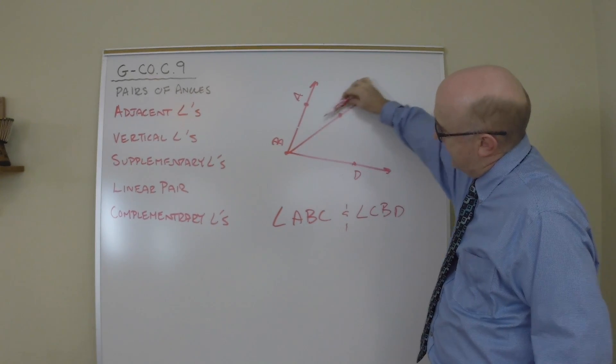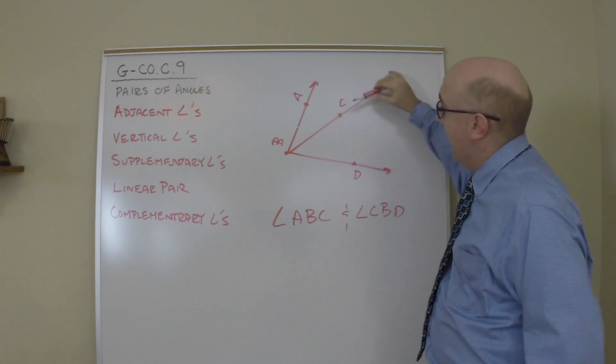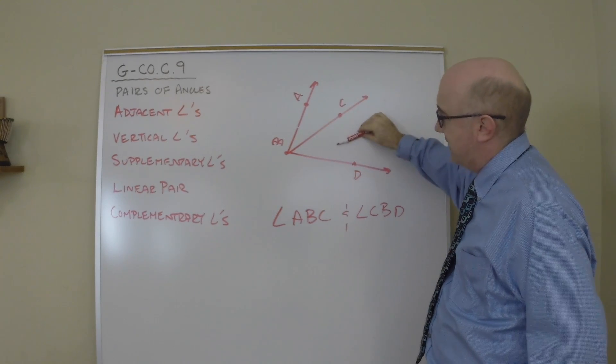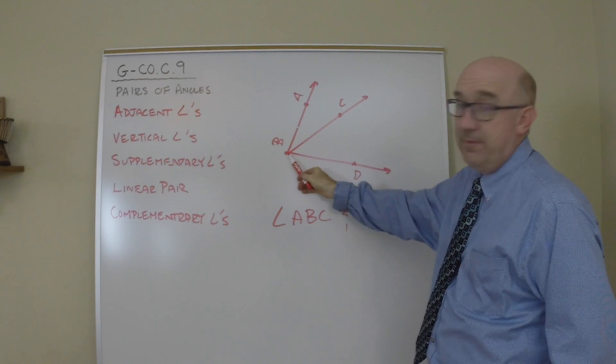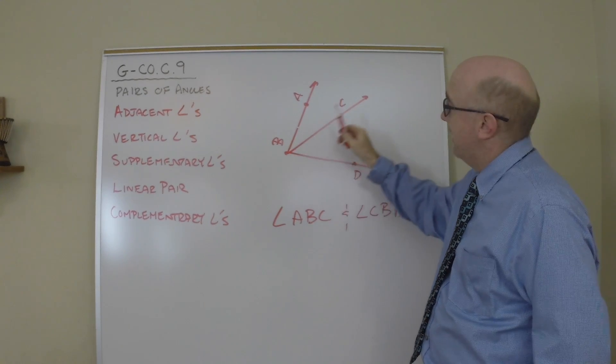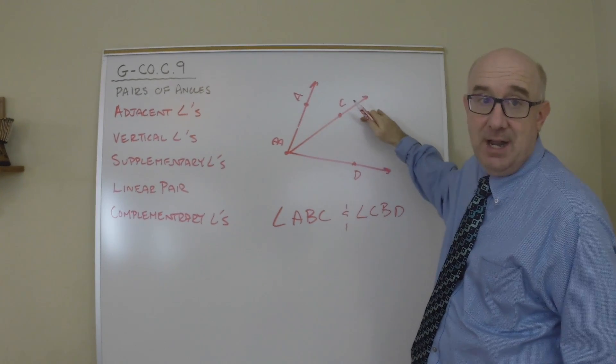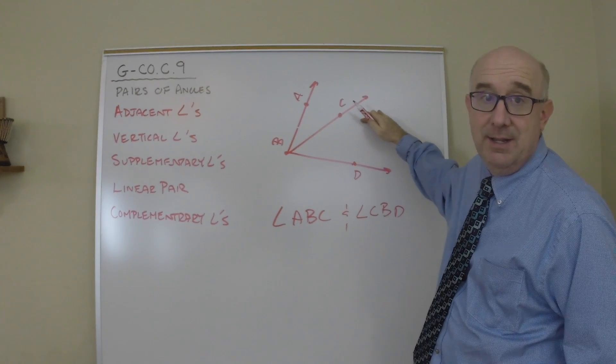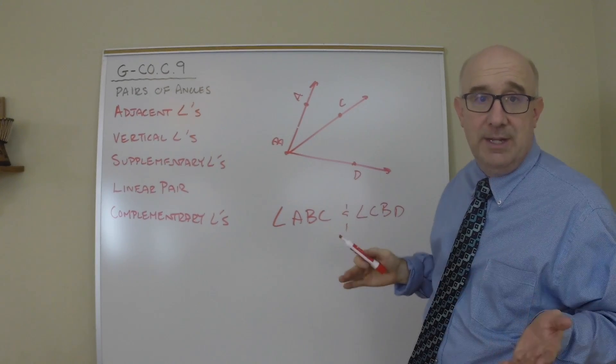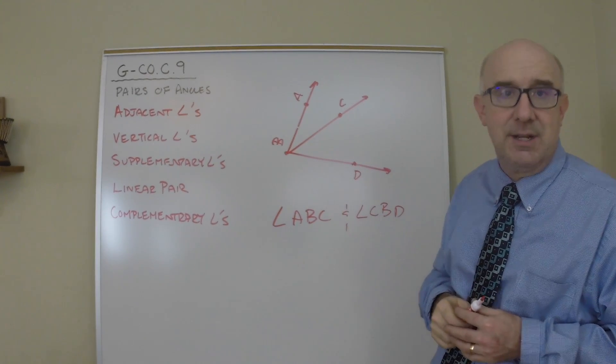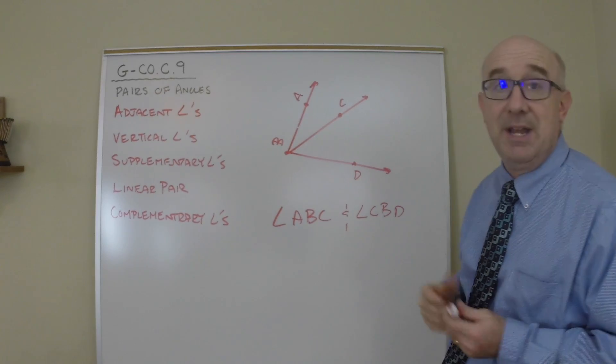Angle ABC, this angle, and angle CBD, this angle. They both share the vertex B. They both have ray BC, and because they are on opposite sides of that ray, then they have no interior points. These are known as adjacent angles by definition.